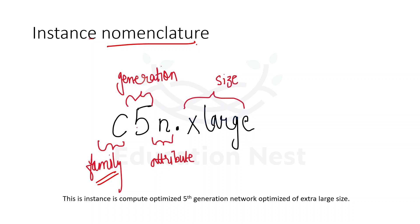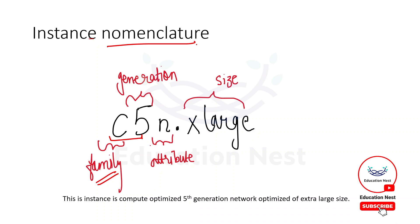The next number represents the generation. The family and the generation would always be a part of the EC2 instance name. The attribute is optional — it may or may not be there — but family and generation would always be present. This is the fifth generation.